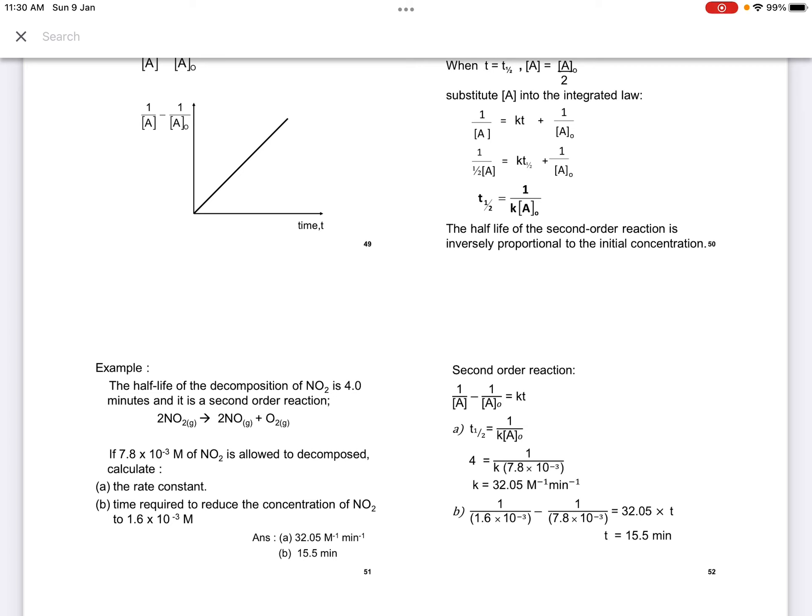And then, we want to find the time required to reduce the concentration to the new concentration. So we use the integrated formula: 1 over A minus 1 over A0 equals to KT. So the T here is 15.5 minutes. You can see all is substitution of the formulas. The important task here is to memorize the formulas.